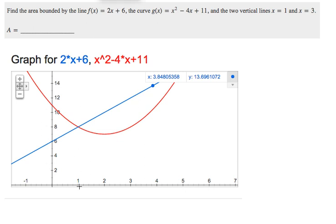So x equals 1, it appears like that's where they cross. It probably does. So let's plug in 1 real quick. f of 1, I'll just do this in my head, is going to be 2 plus 6 is 8. And g of 1 is going to be 1 minus 4, which is negative 3 plus 11. Yeah, that's also 8. So they definitely cross there at 1.